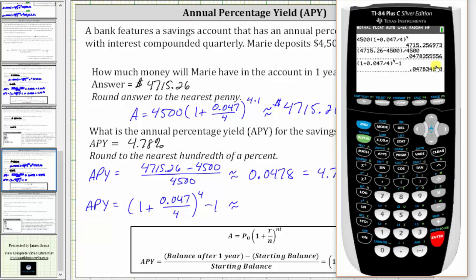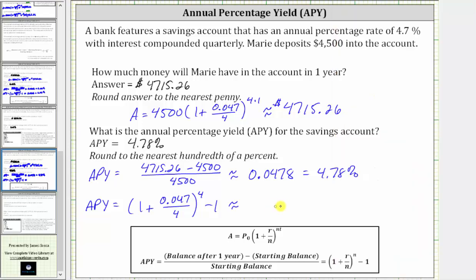Notice there's a slight difference between these two values, and that's because the $4,715.26 was rounded, while this is exact. But rounding to the fourth decimal place, we still have 0.0478, which gives us the same APY of 4.78%. I hope you found this helpful.